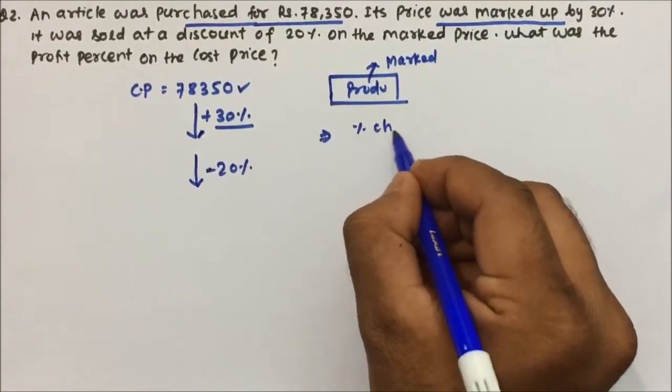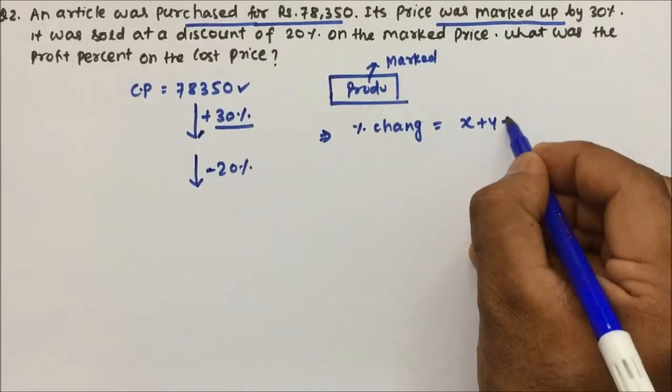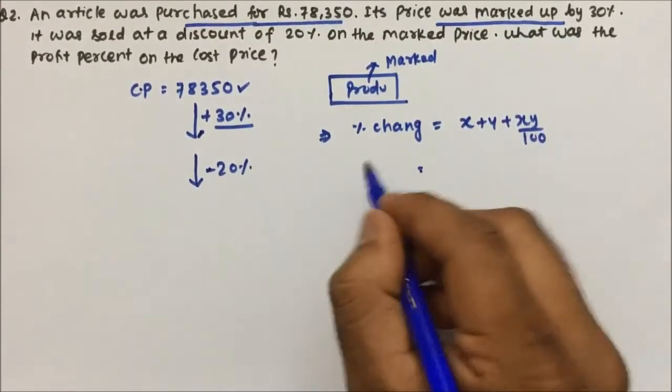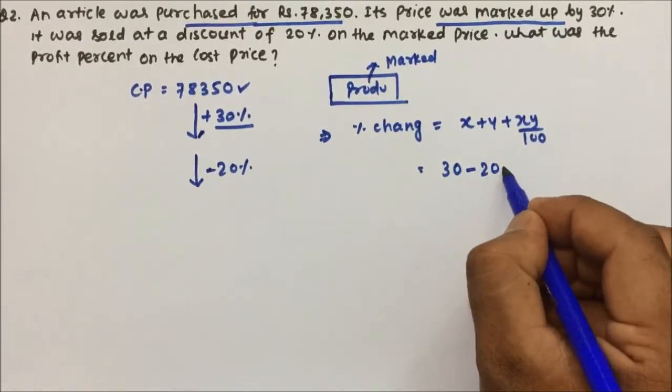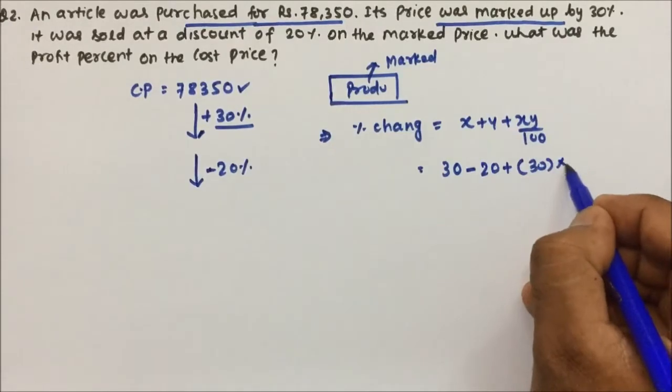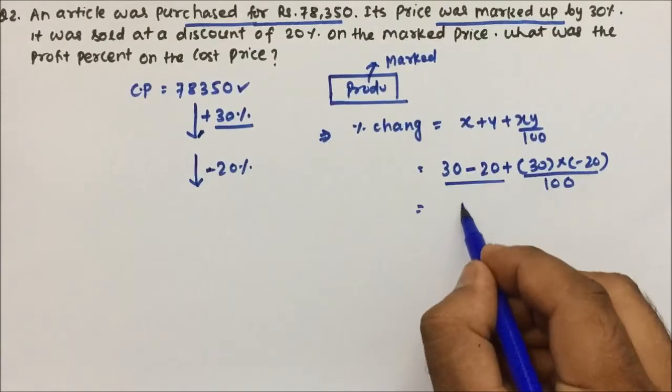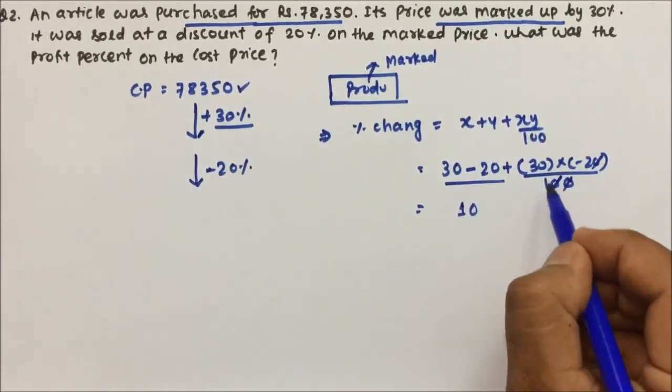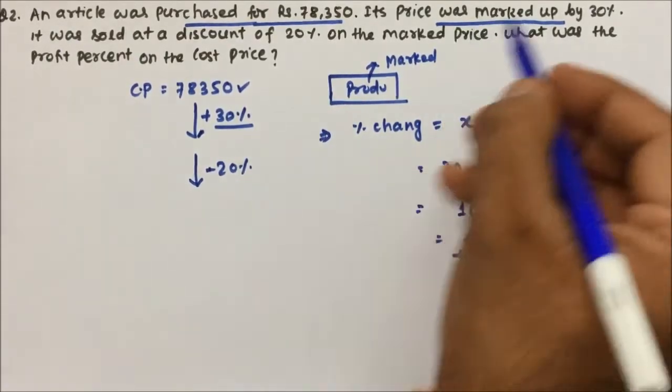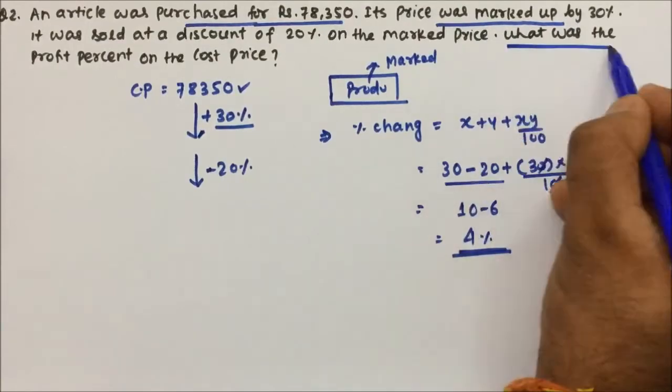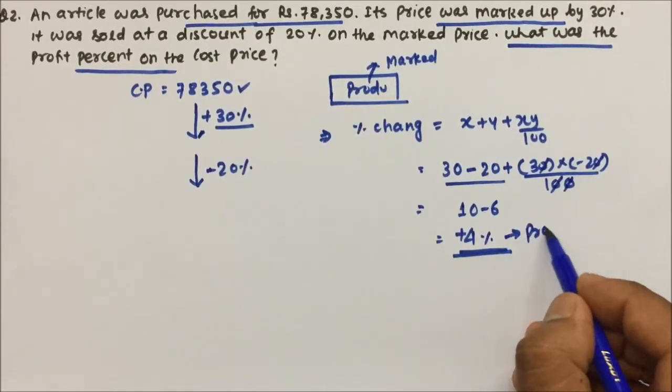Now we will use the percentage of change formula, the cumulative change formula. So it will be X plus Y plus XY by 100. Now what is X? 30 and 30 is in profit, so plus 30. Y is minus, so minus 20 plus 30 into minus 20 and divide by 100. 30 minus 20 is 10 and 10 will cancel 10. 10 will cancel 10. So minus 6 is close to 4%. So the total change will be, I mean, what they're asking, what was the profit percentage on the cost price? So see, this is plus 4%. Plus 4% is nothing but profit. And they're asking the percentage of profit itself. So directly we have got it plus 4%. So answer will be 4%.